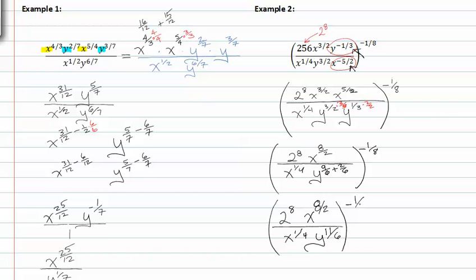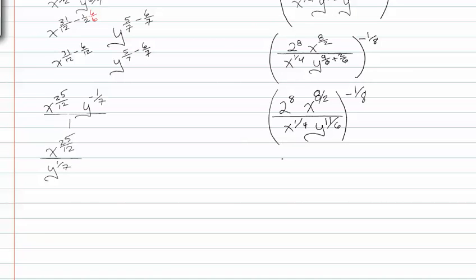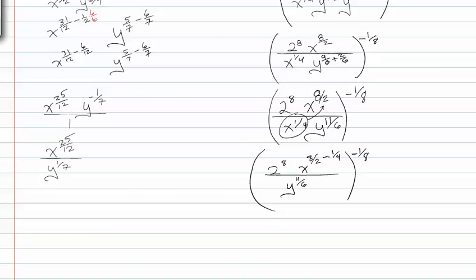Again, this is all raised to the negative one-eighth. Now I have two to the eighth, x to the eight-halves, all over x to the one-fourth, y to the eleven-sixths, raised to the negative one-eighth. Continuing on, I can use the quotient rule to subtract one-fourth from eight-halves. I need to get a common denominator of four by multiplying by two over two. I get two to the eighth, x to the sixteen-fourths minus one-fourth, all over y to the eleven-sixths, raised to the negative one-eighth.